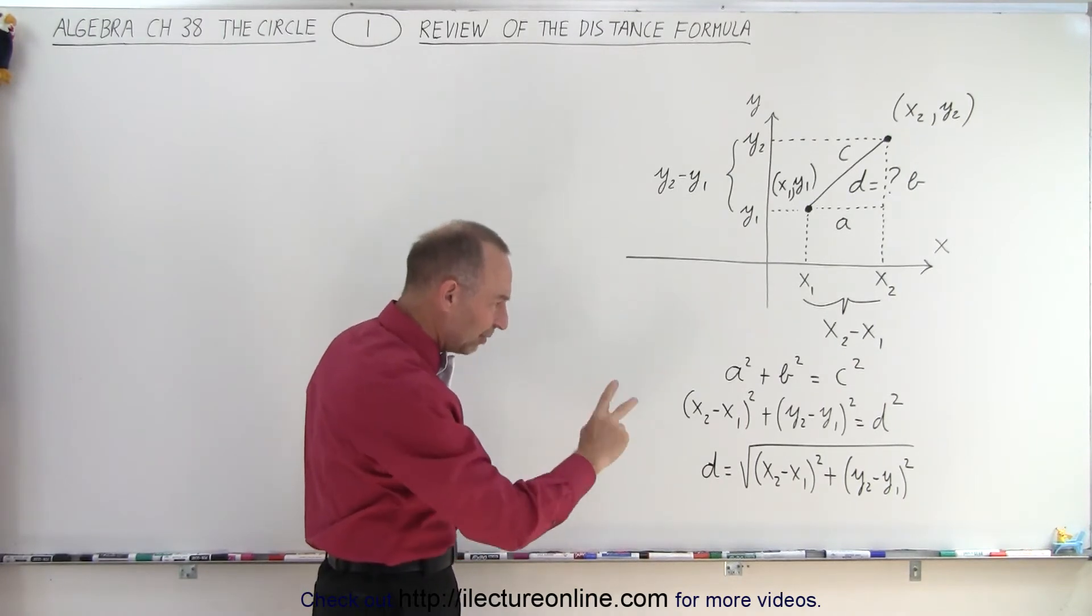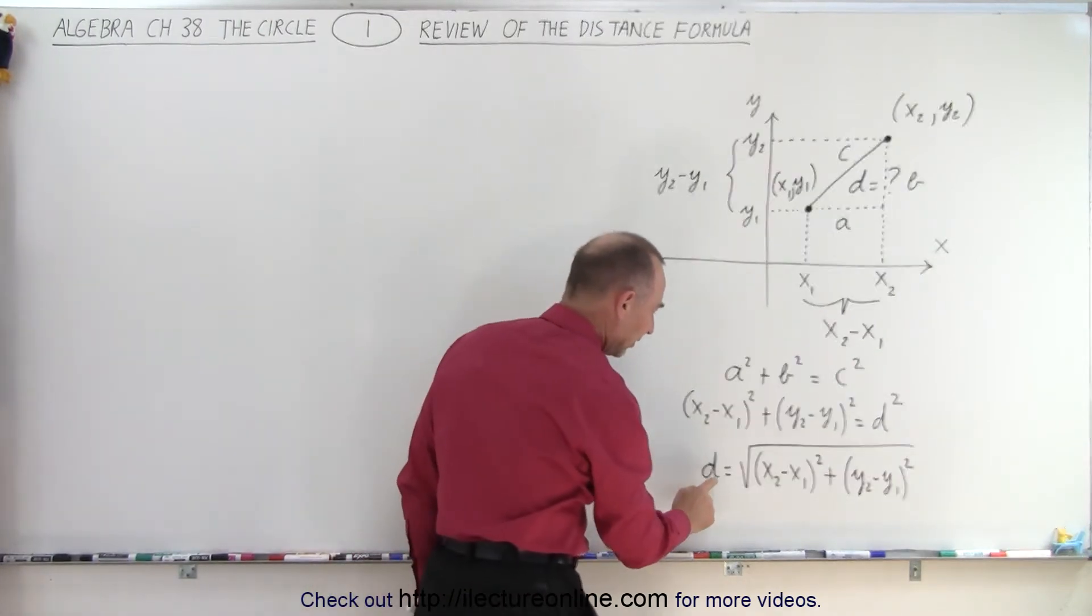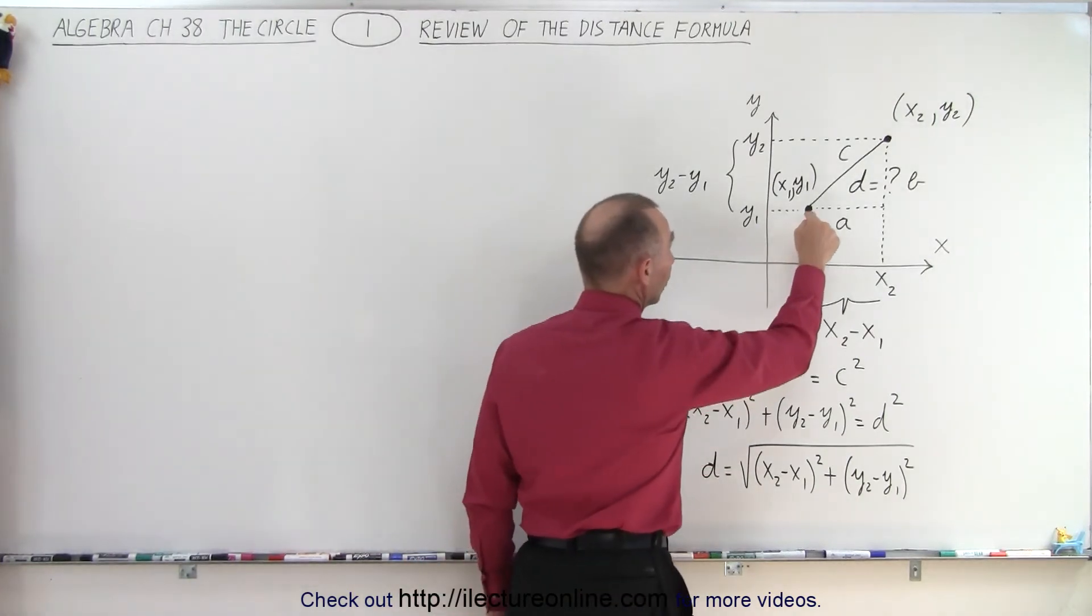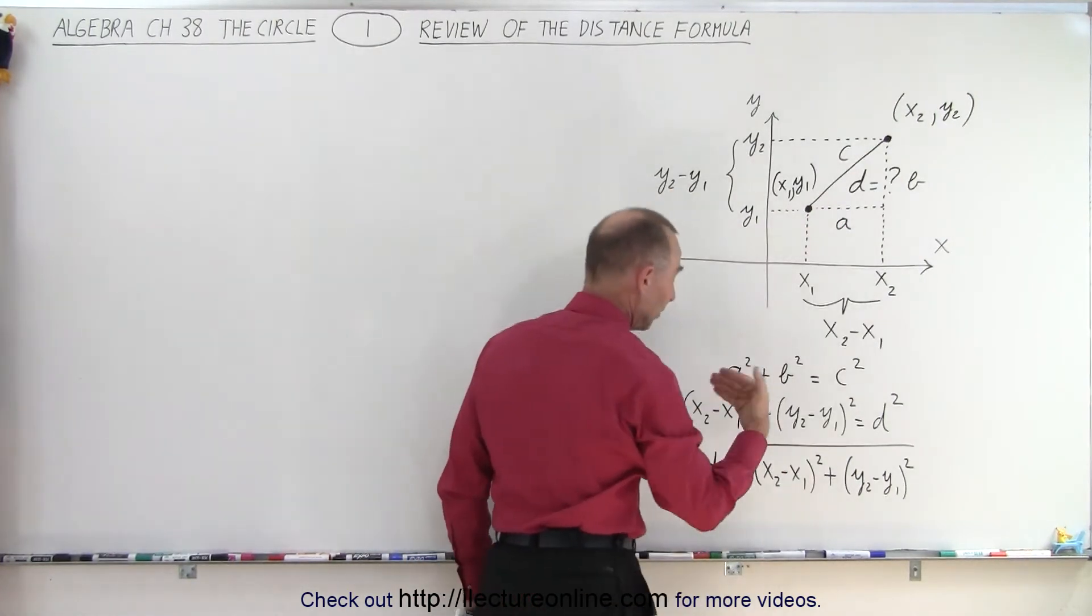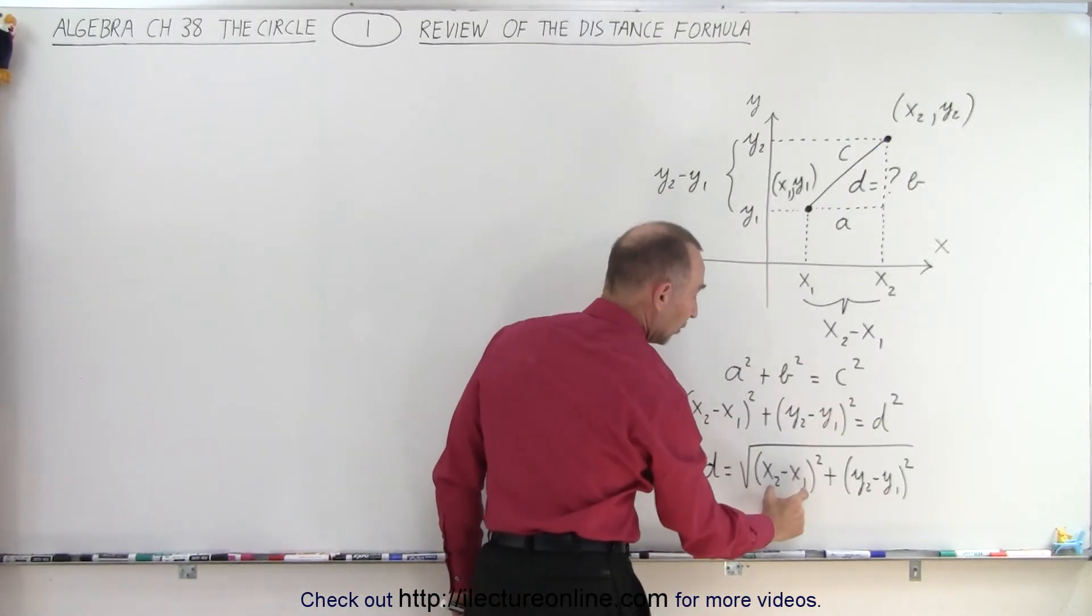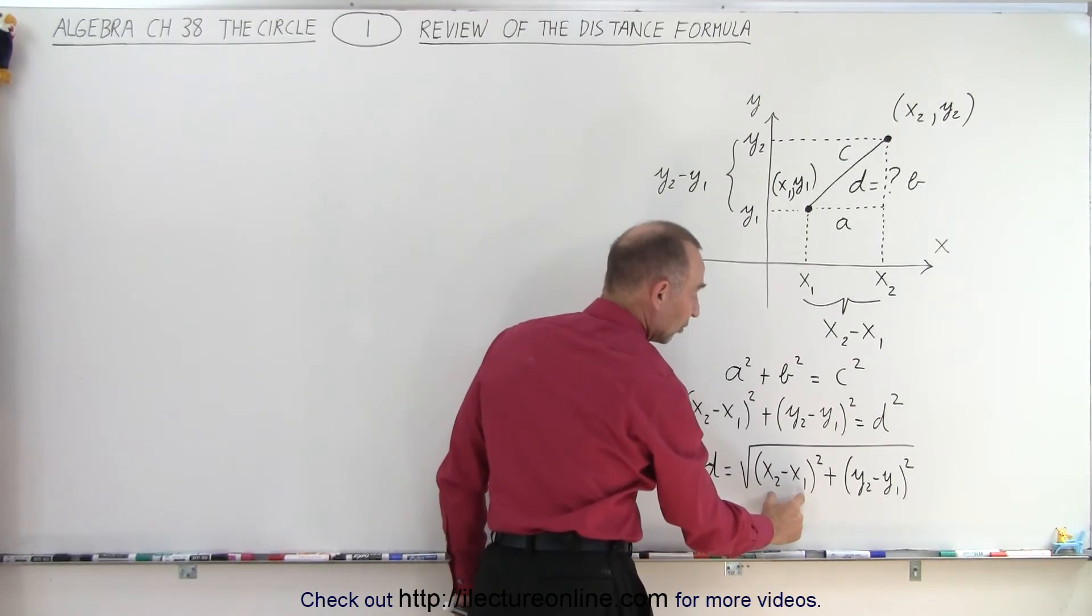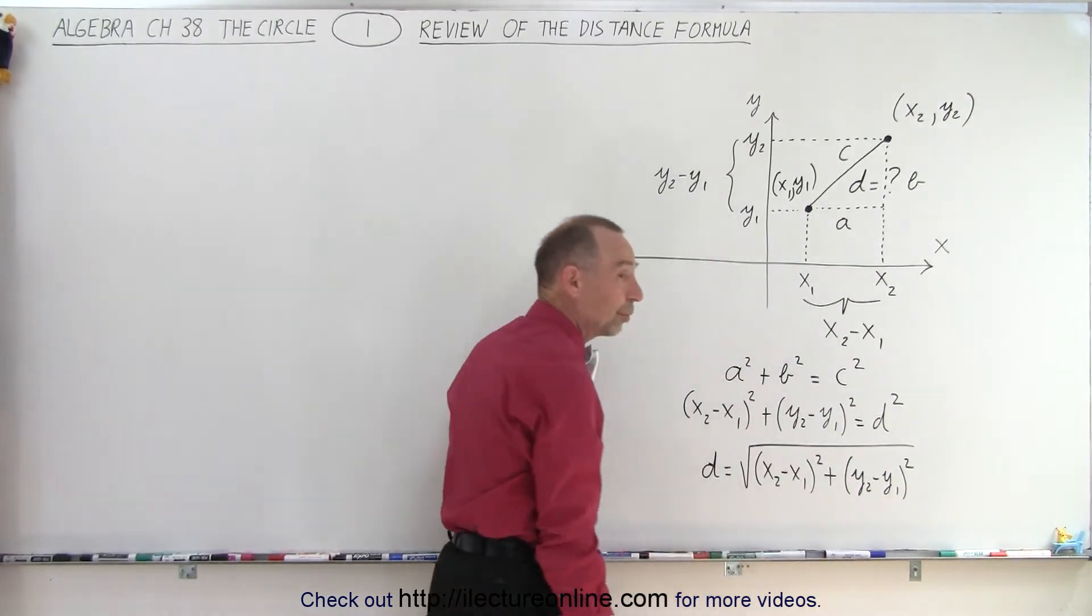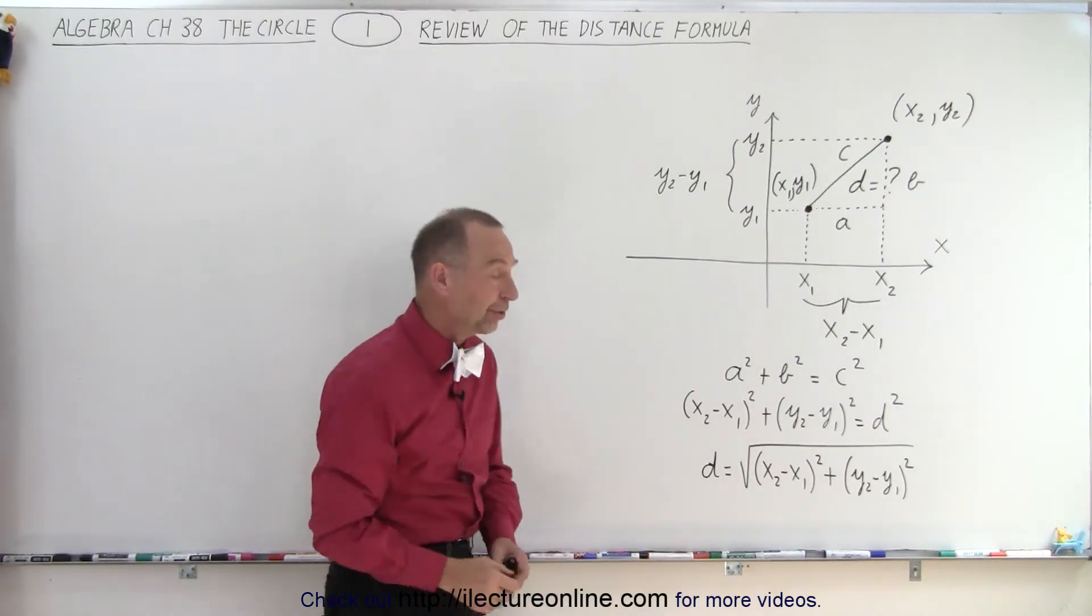So then if we take the square root of both sides and we turn it around, you can then see that the distance D, which is the distance from here to here, is simply equal to the square root of the distance in the X direction squared plus the distance in the Y direction squared. Pythagorean theorem, as simple as that.